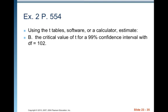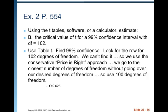Now we want the critical value of T for a 99% confidence interval with degrees of freedom equaling 102. Again, we use Table T. We find 99% confidence, then look for the row with 102 degrees of freedom — we can't find it. So we use the conservative Price is Right approach: go to the closest degrees of freedom without going over. That's 100, giving T* = 2.626.